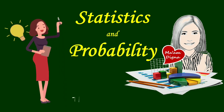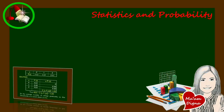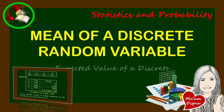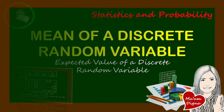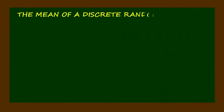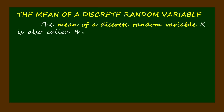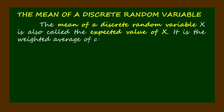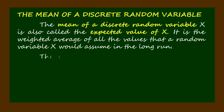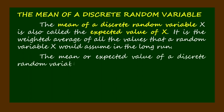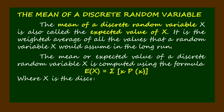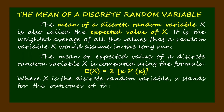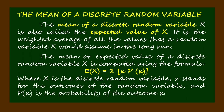Statistics and probability — lesson for the week is all about the mean of a discrete random variable, also called the expected value of a discrete random variable. The mean of a discrete random variable x is also called the expected value of x. It is the weighted average of all the values that a random variable x would assume in the long run. The mean or expected value is computed using the formula: E(x) equals the summation of x times P(x), where uppercase X is the discrete random variable, lowercase x stands for the outcomes, and P(x) is the probability of the outcome x.